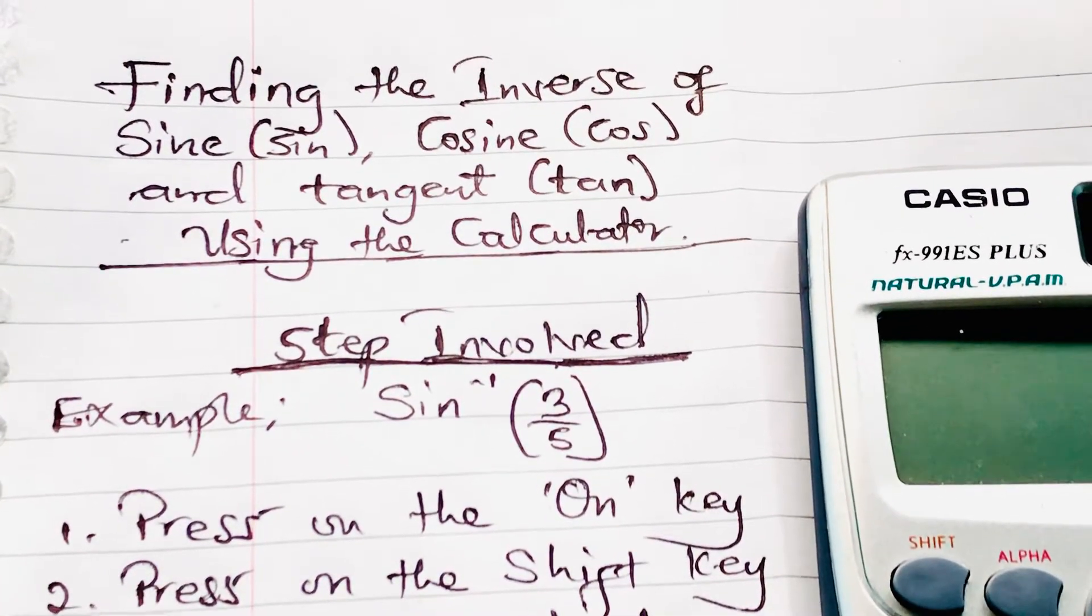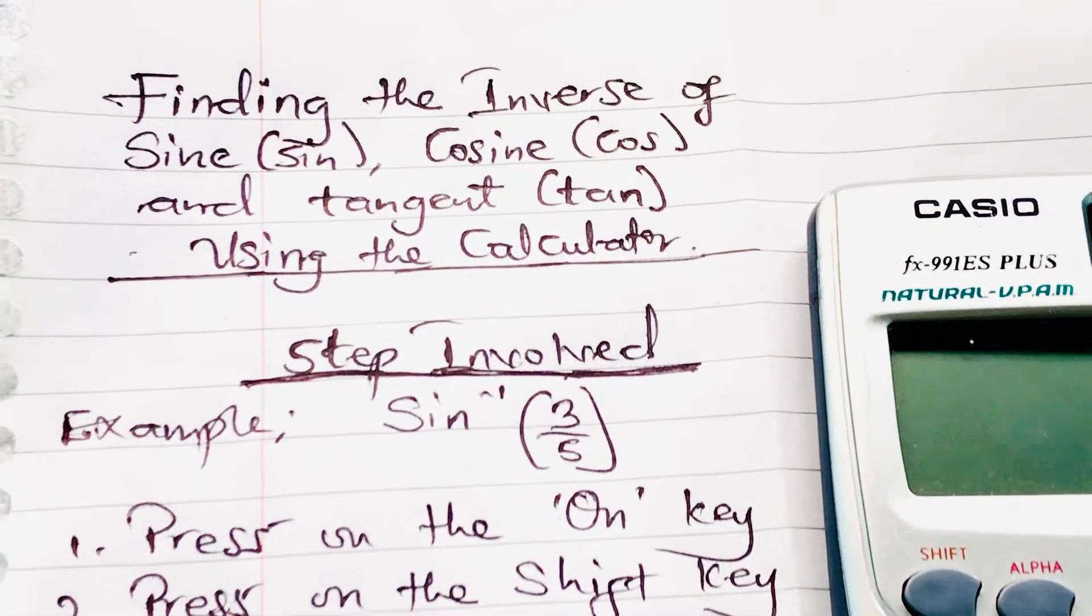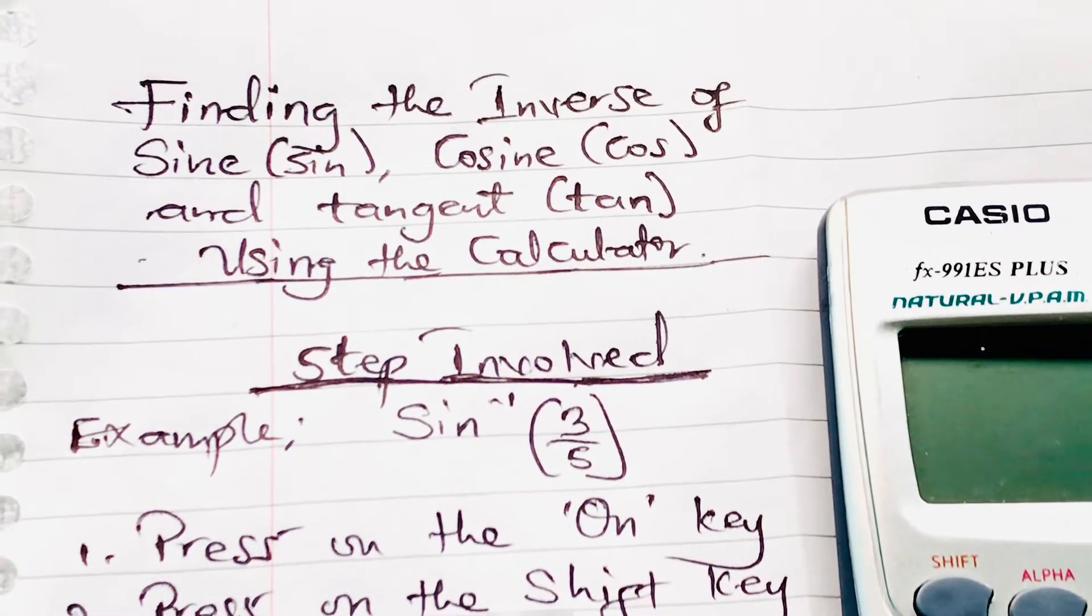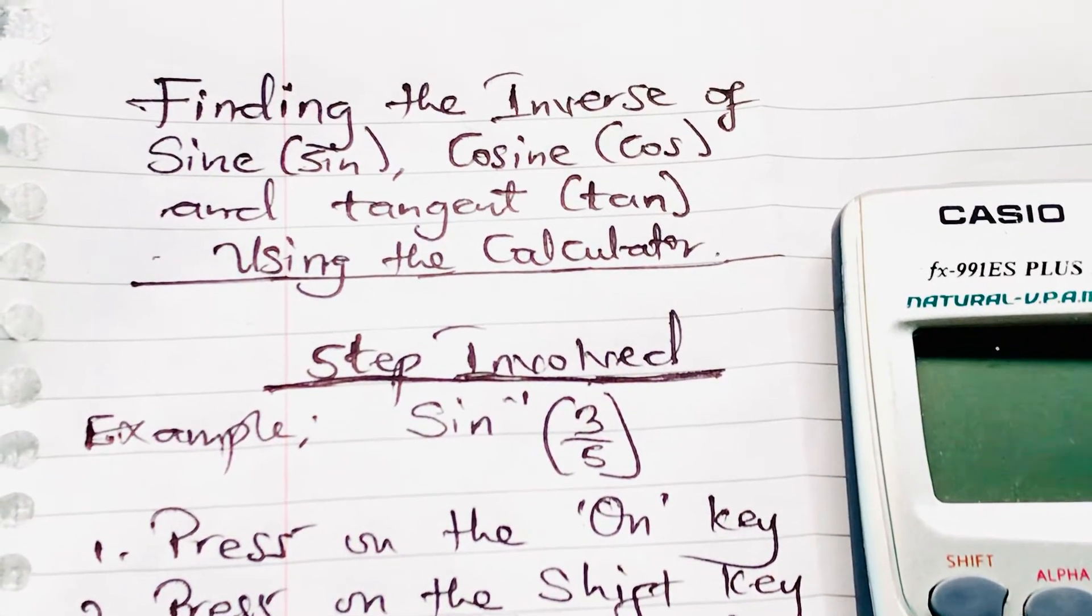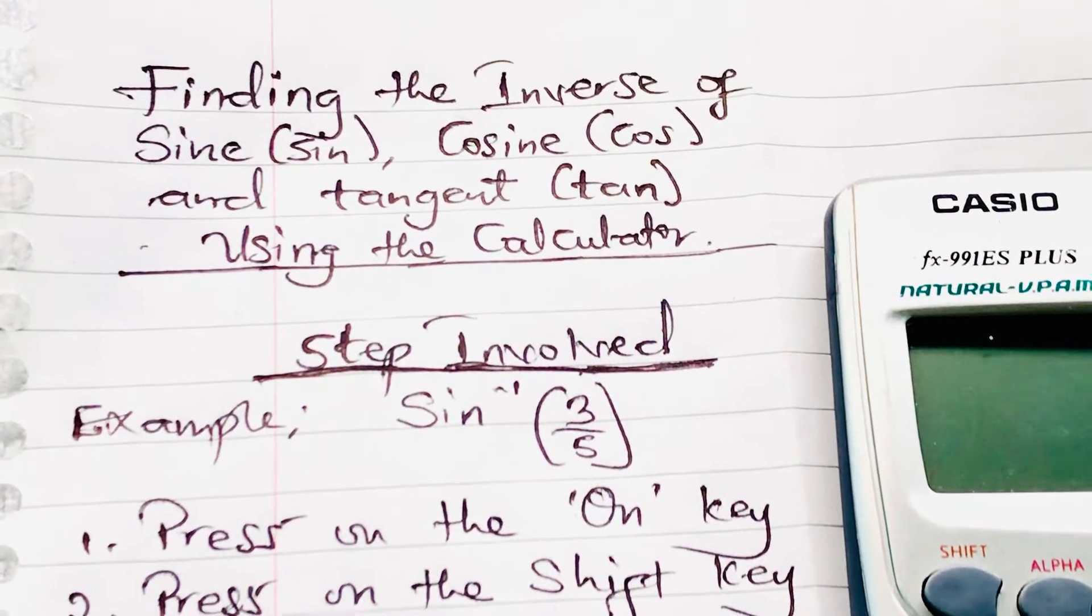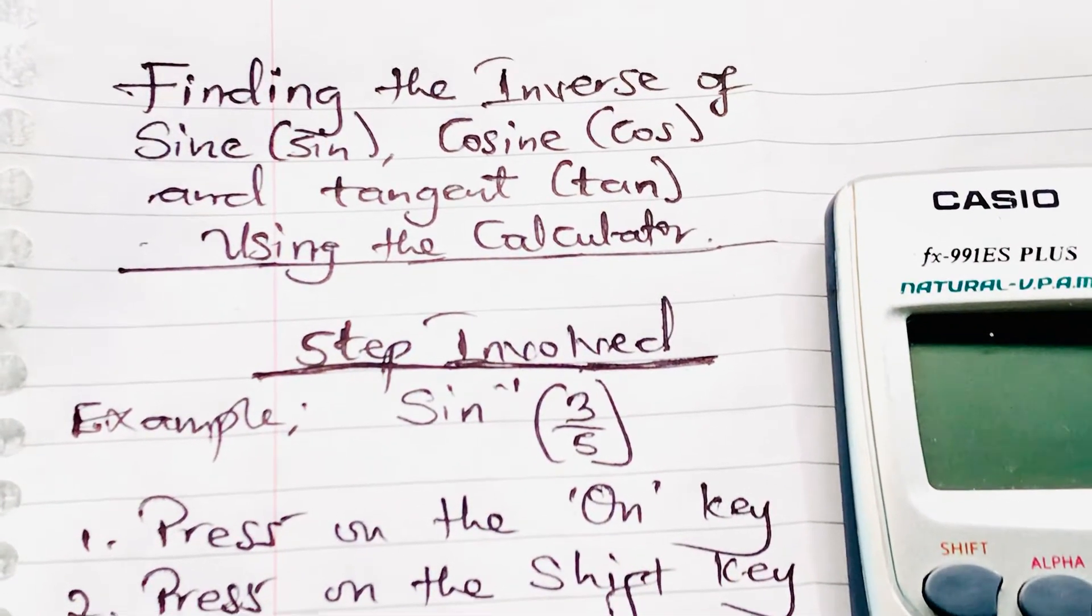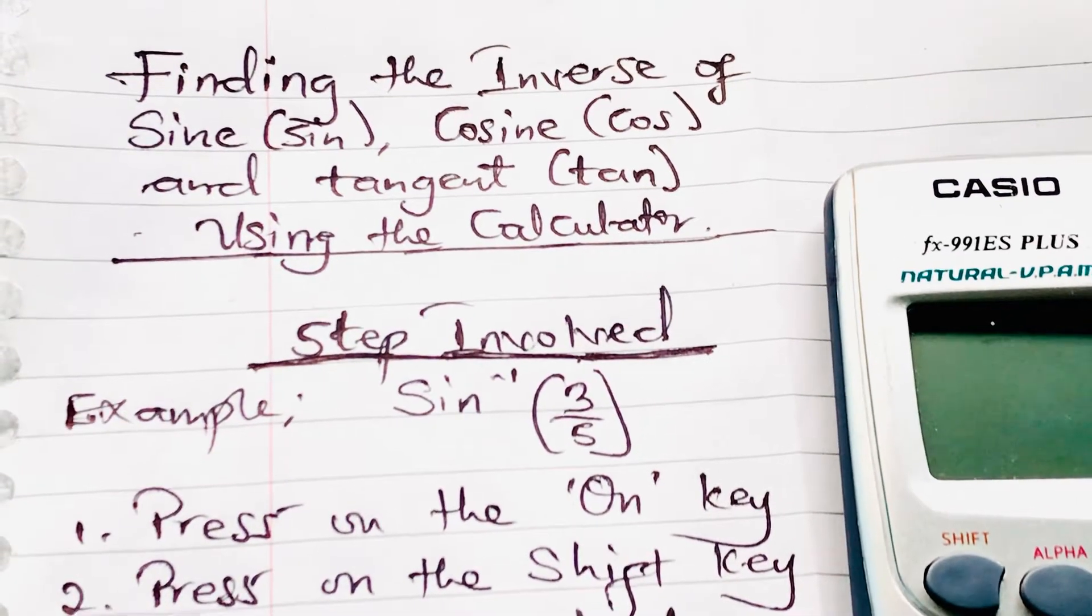As we learned in our previous lesson, sine can also be written as S-I-N, cosine can be written as C-O-S, whilst tangent can also be short written as T-A-N.